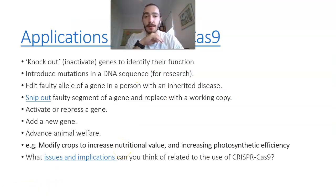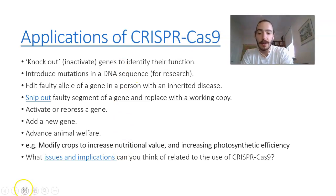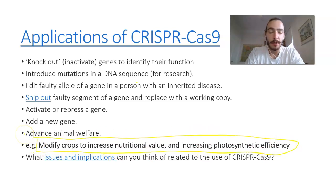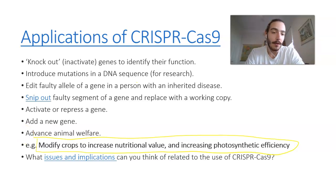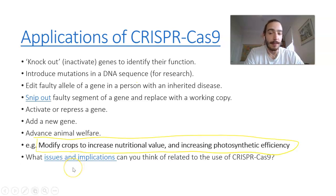Here are a couple of applications you could use it for. VCAA really wants you to know, if you read those FAQs, these particular reasons: modifying crops to increase their nutritional value — think of things like golden rice and increasing photosynthetic efficiency, so with drier, hotter climates we might be able to grow things more easily. Take note there are lots of ethical implications — I'm not going to go into them in this video, but in preparation for the SAC and the exam you should know a bit about those.